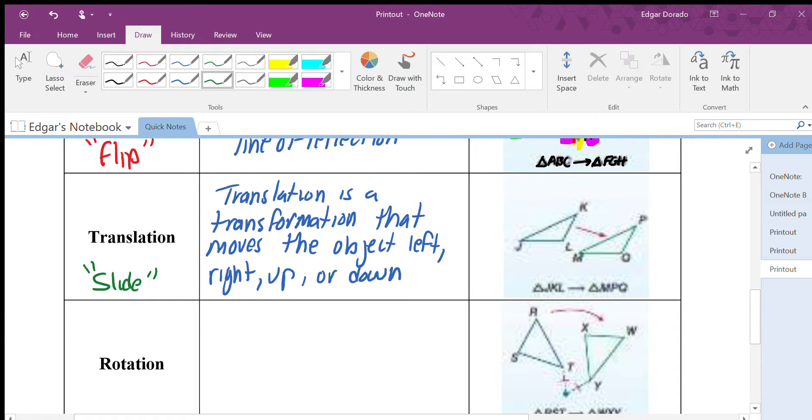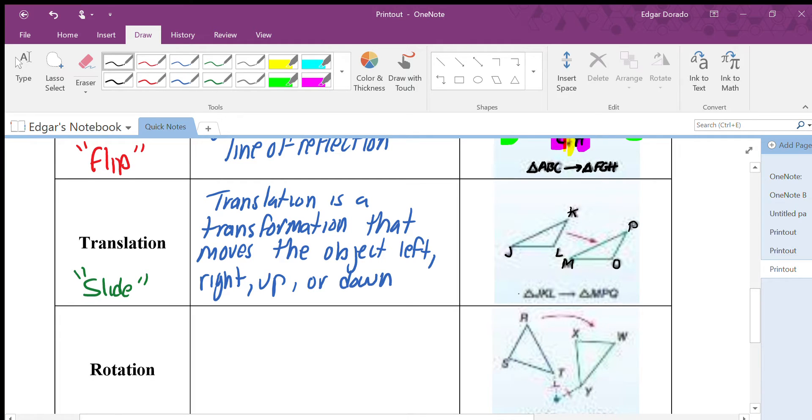Whether that slide is left, right, maybe in two different directions, maybe down and to the right. And this little image here, I'm going to make the letters a little darker here. This is J, L, K. This is M, O, P. So triangle J, K, L is being transformed, and in this case it's being translated to M, P, O.